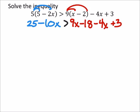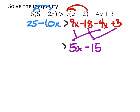And I can combine like terms on the right side there. My 9x minus 4x is 5x. And negative 18 plus 3 is minus 15. This would be on the left side of 25 minus 10x.